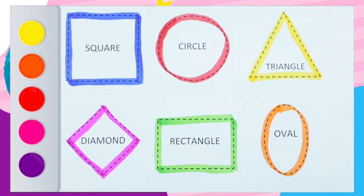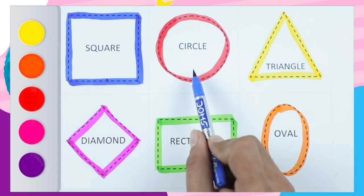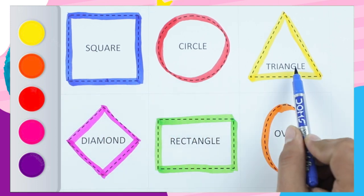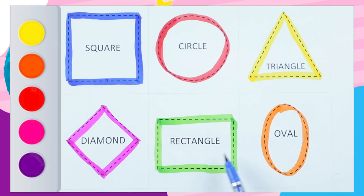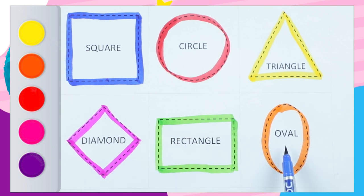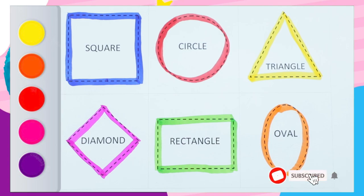Green color square. Square, circle, triangle, diamond, rectangle, and oval.